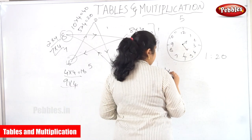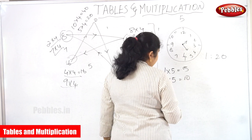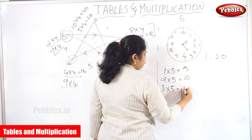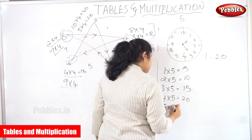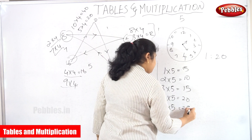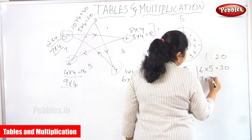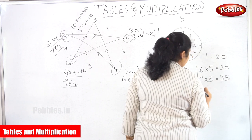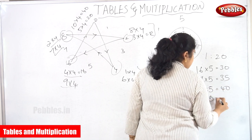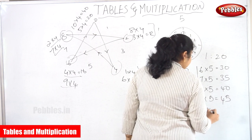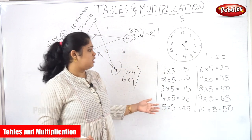1 into 5 is equal to 5, 2 into 5 is equal to 10, 3 into 5 is equal to 15, 4 into 5 is equal to 20, 5 into 5 is equal to 25, 6 into 5 is equal to 30, 7 into 5 is equal to 35, 8 into 5 is equal to 40, 9 into 5 is equal to 45, 10 into 5 is equal to 50. These are the 5 tables.